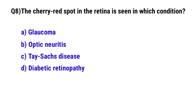Question No. 8. The cherry red spot in the retina is seen in which condition? The correct option is C: Tay-Sachs disease.